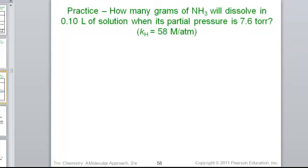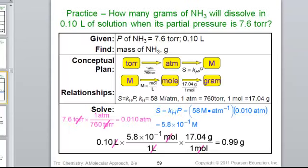We now know the volume is 0.1 liter, we know the pressure is 7.6 torr, and we know the 58 molar per atmosphere as the K constant for solubility of ammonia.